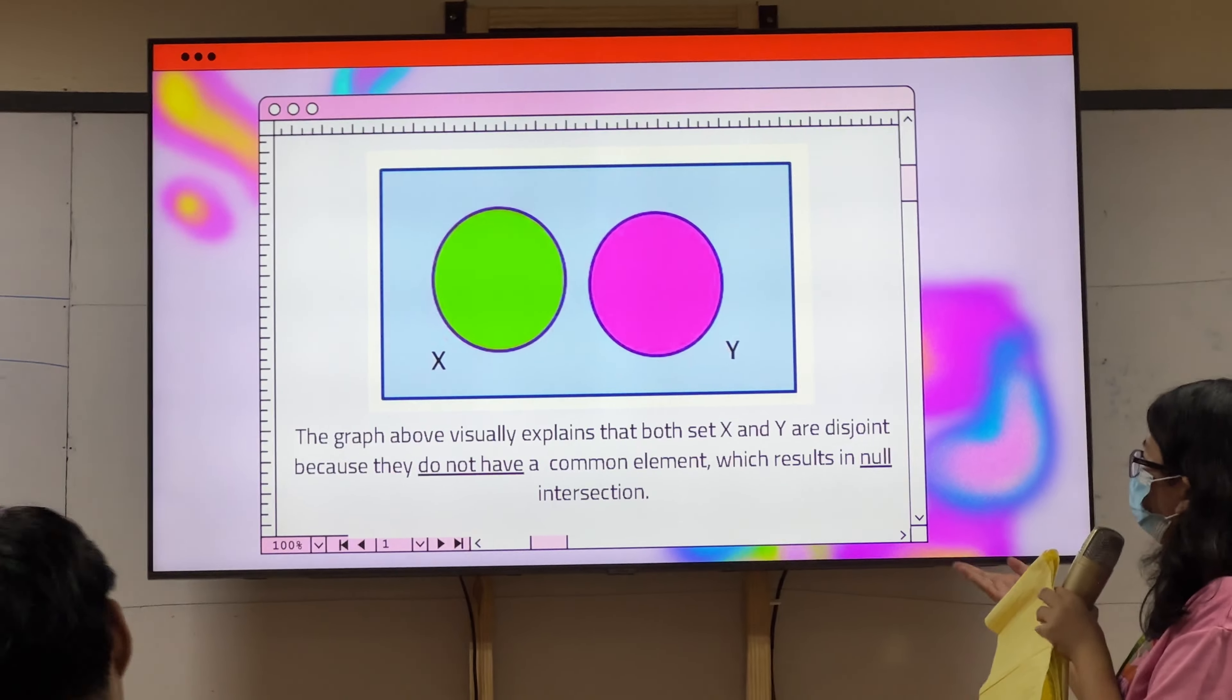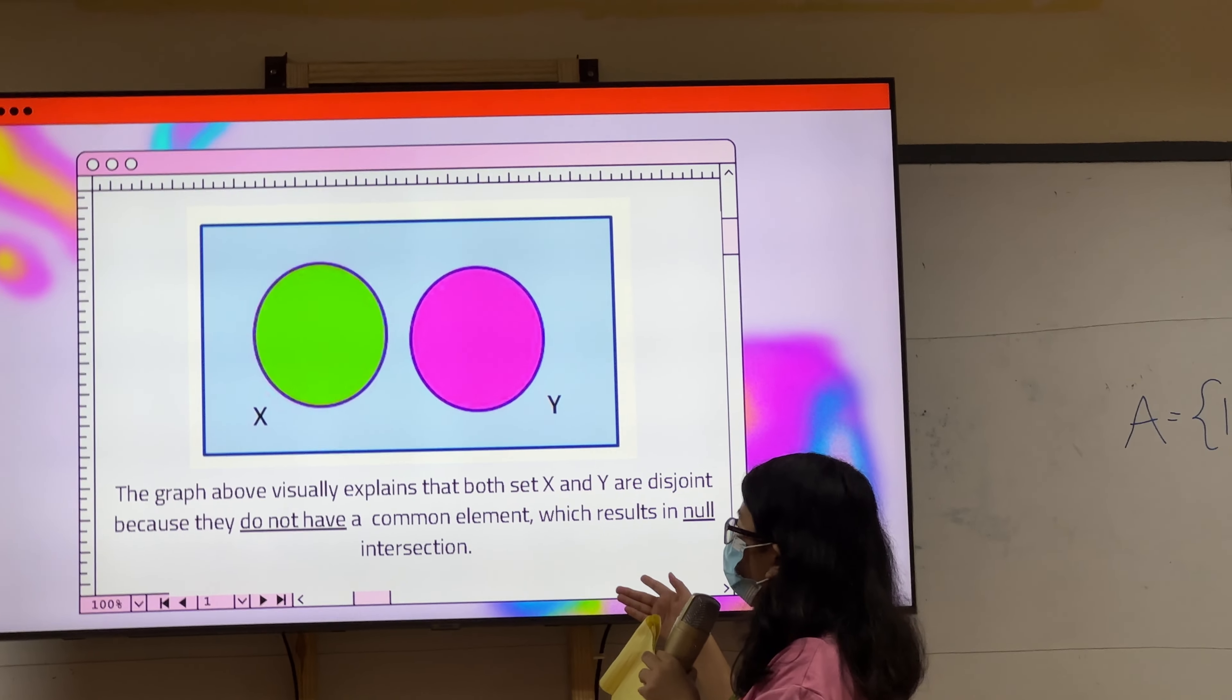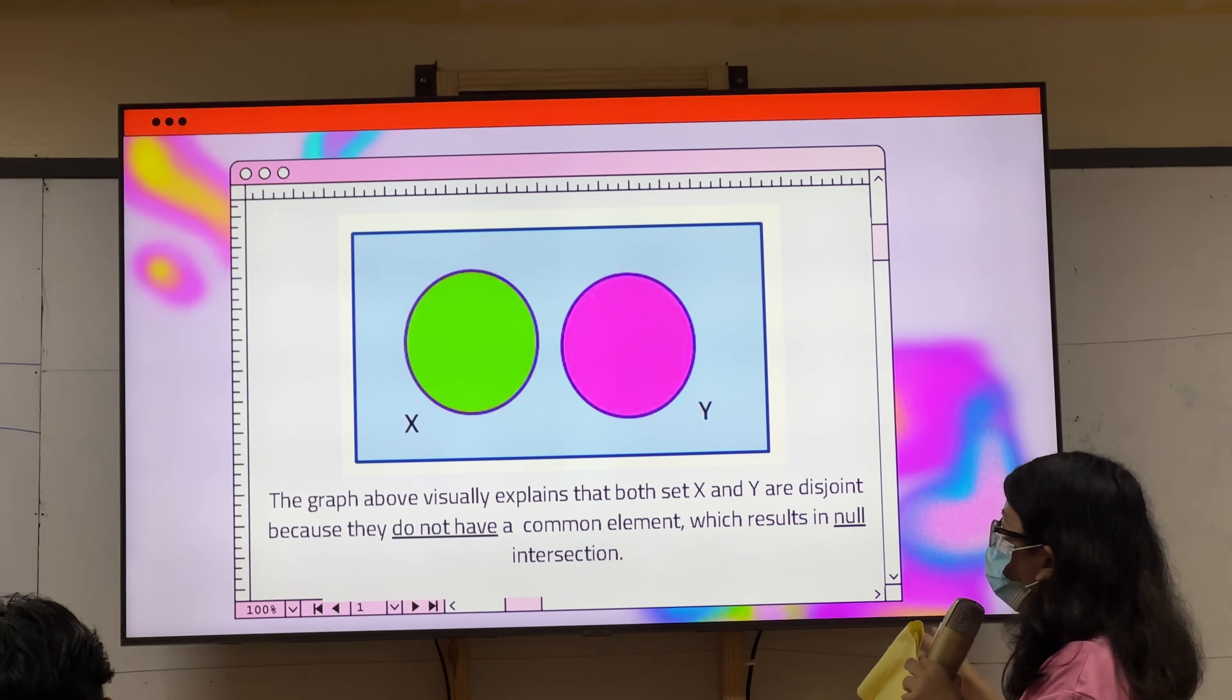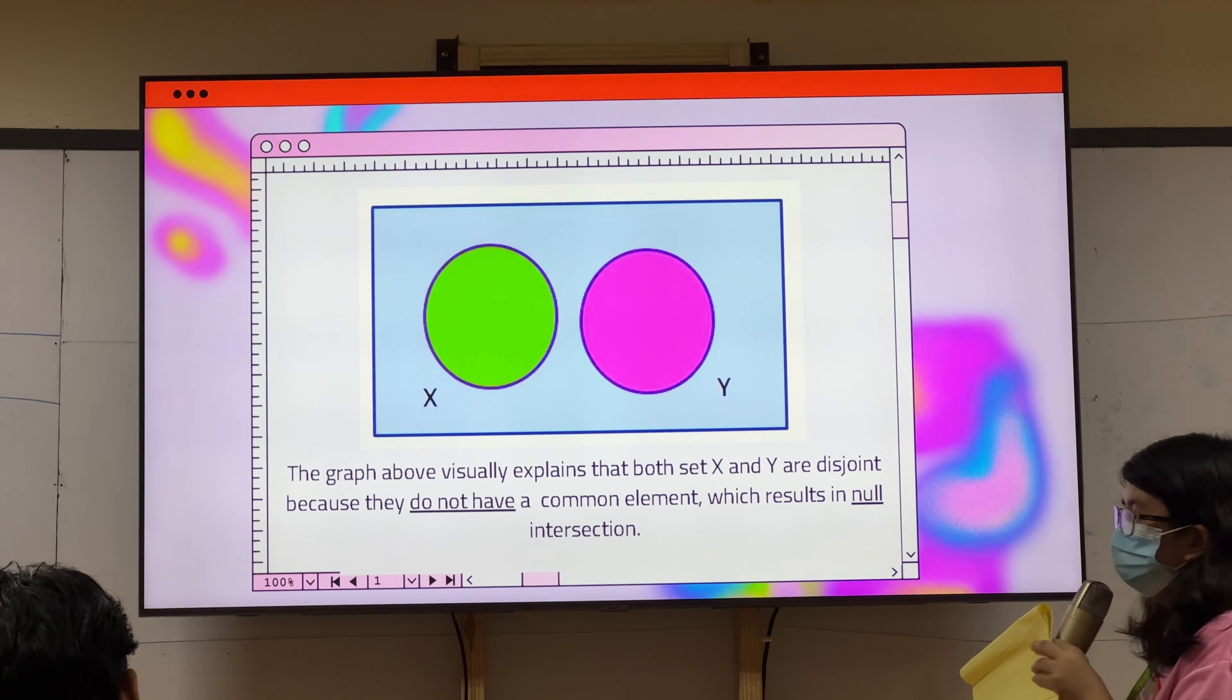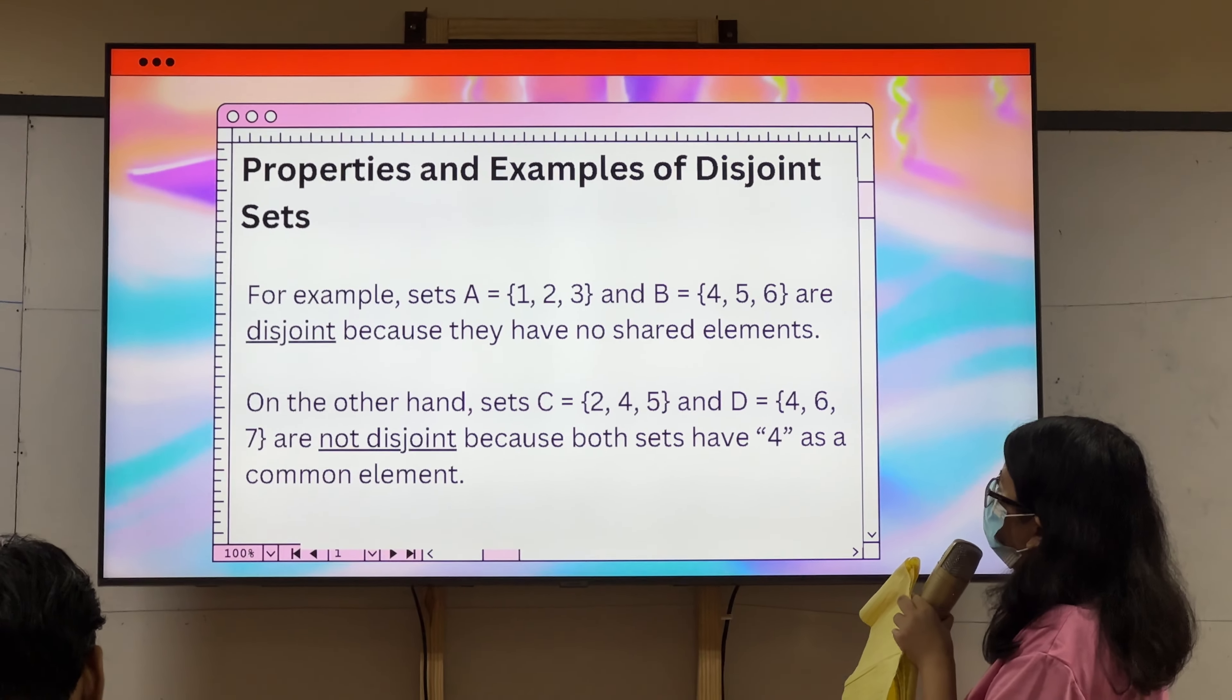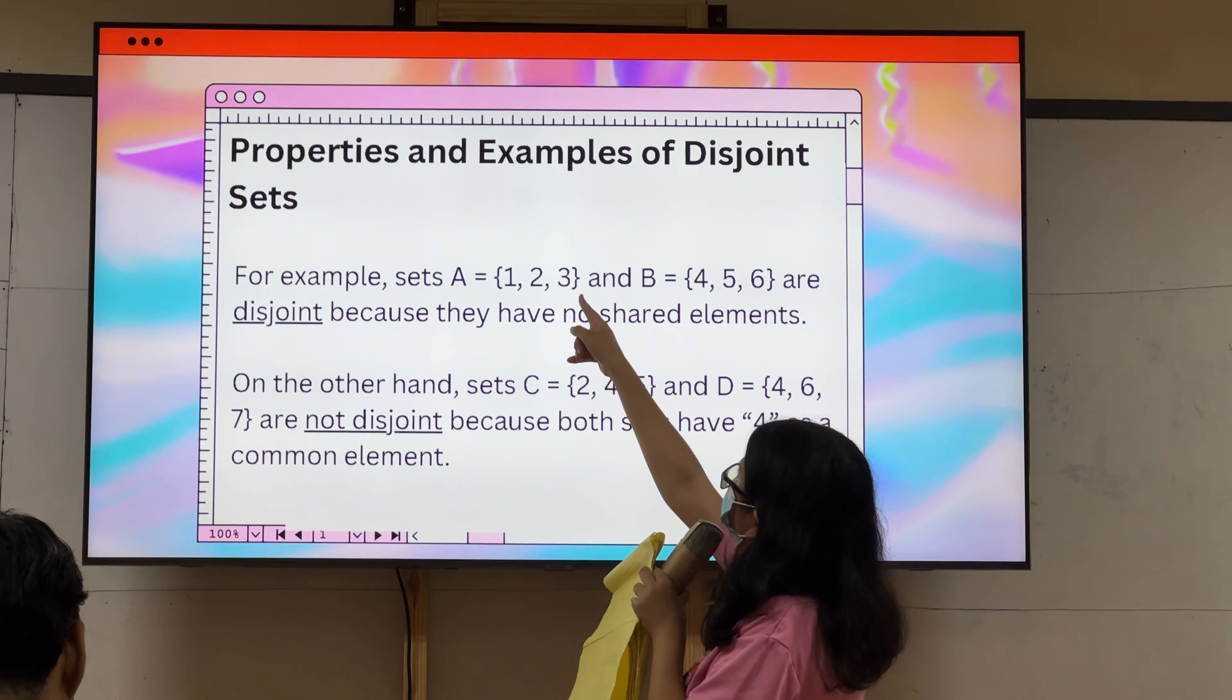Lastly, disjoint sets. Disjoint sets are sets that don't share any elements with each other. Basically, mga sets silang, literal, they do not have any common element, which results in null interception.